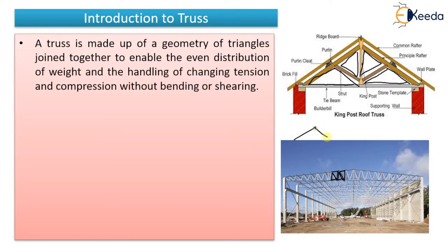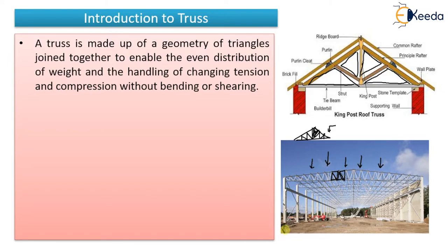All the members form triangles. Simple trusses like this also have certain triangles. The truss is made up of a geometry of triangles joined together, and it enables even distribution. The load applied over the truss will be evenly distributed over all the points, and finally it will be transferred to the column, from the column to the foundation and the subsoil, without any bending and shear.